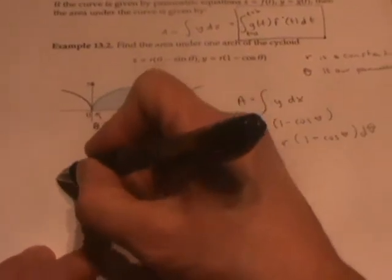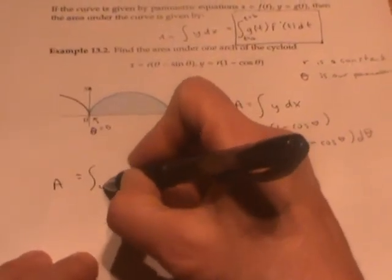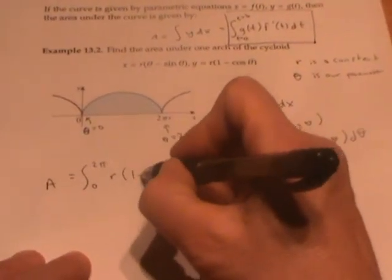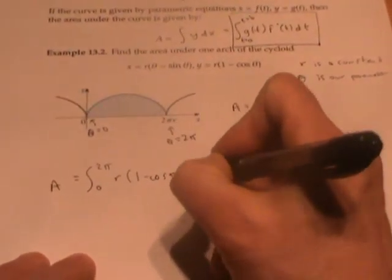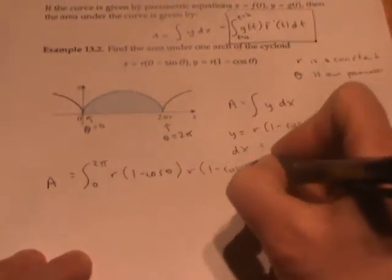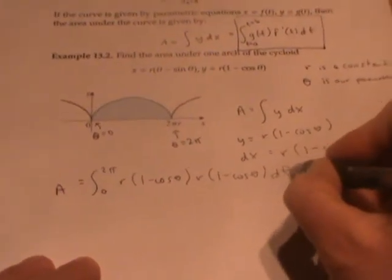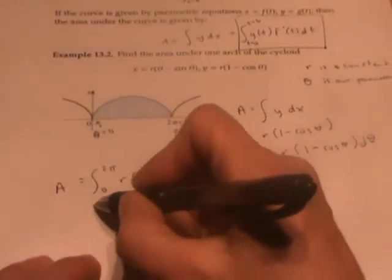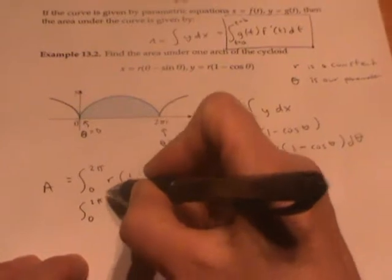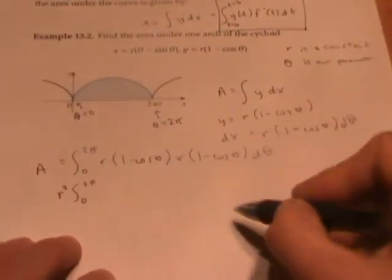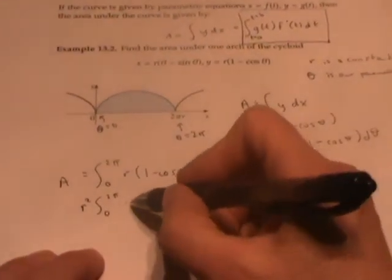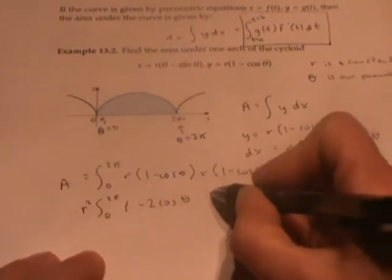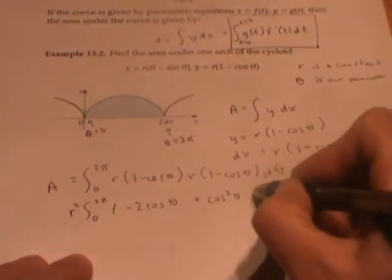Therefore, our area is the integral from zero to two pi of y times dx. We can distribute, pull out our r squared, and then distribute the one minus cosine theta times one minus cosine theta to get one minus two cosine theta plus cosine squared theta d theta.